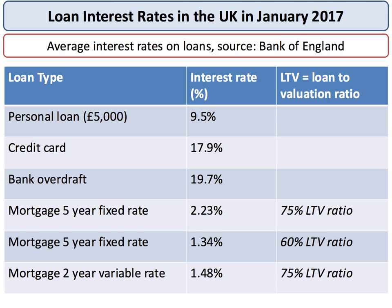You have to find the deposit to cover the other 25%. Hopefully you can see that interest rates on mortgages are pretty low — in fact at historically low levels. You can lock yourself into a five-year fixed rate of 1.34%, providing you can find 40% of the value of the house. The variable rate mortgage goes up and down with the market from month to month — just under 1.5%. Again, a low rate. But for many people it's not the interest rate on the loan that's the key — it's the challenge and the struggle to find the money for the deposit, given how high house prices are.